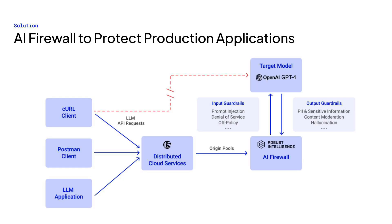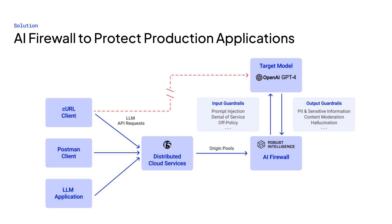Now, instead of users calling LLM APIs directly, they would use the same exact request schema to call out to a new API exposed by the F5 Distributed Cloud load balancer. This new API will now be protected by AI firewall and provides safe and secure access to the LLM.